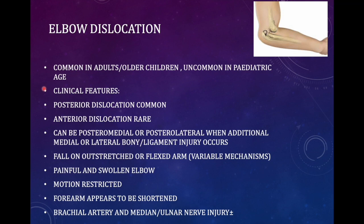Medial structures prevent lateral migration while lateral structures prevent medial migration. The common mechanism is fall on an outstretched hand, though direct impact on the elbow can also cause dislocation. Clinical findings similar to fracture: painful swelling, motion restriction, and the forearm appears shorter because the whole forearm has migrated posteriorly. There can be associated brachial artery injury, median nerve injury, or radial nerve injury.